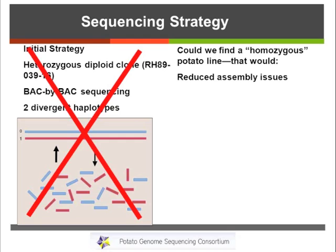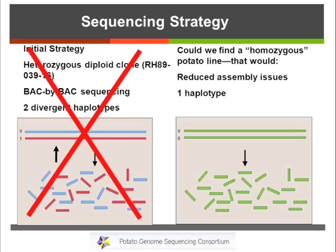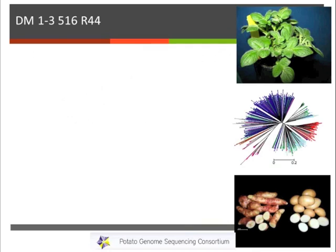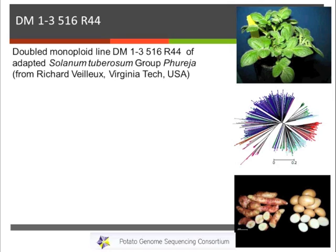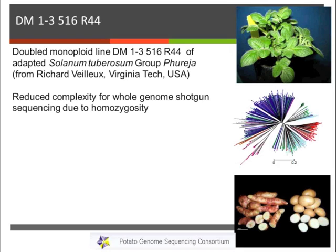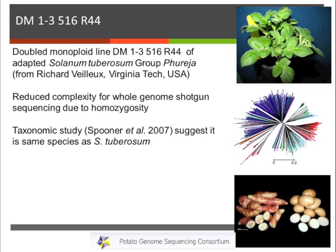The question then was: could we find a homozygous line? This would reduce our assembly issues, since there would be only one haplotype to look at. If it was a double monoploid, you'd have your two identical haplotypes, chop them up, and it would be much easier to put them back together. This line does exist — it was made by Richard Voulou, and it's called DM1-3 516 R44. It's a double monoploid line that comes from group Phureja, and it clearly has reduced complexity for whole-genome shotgun sequencing.